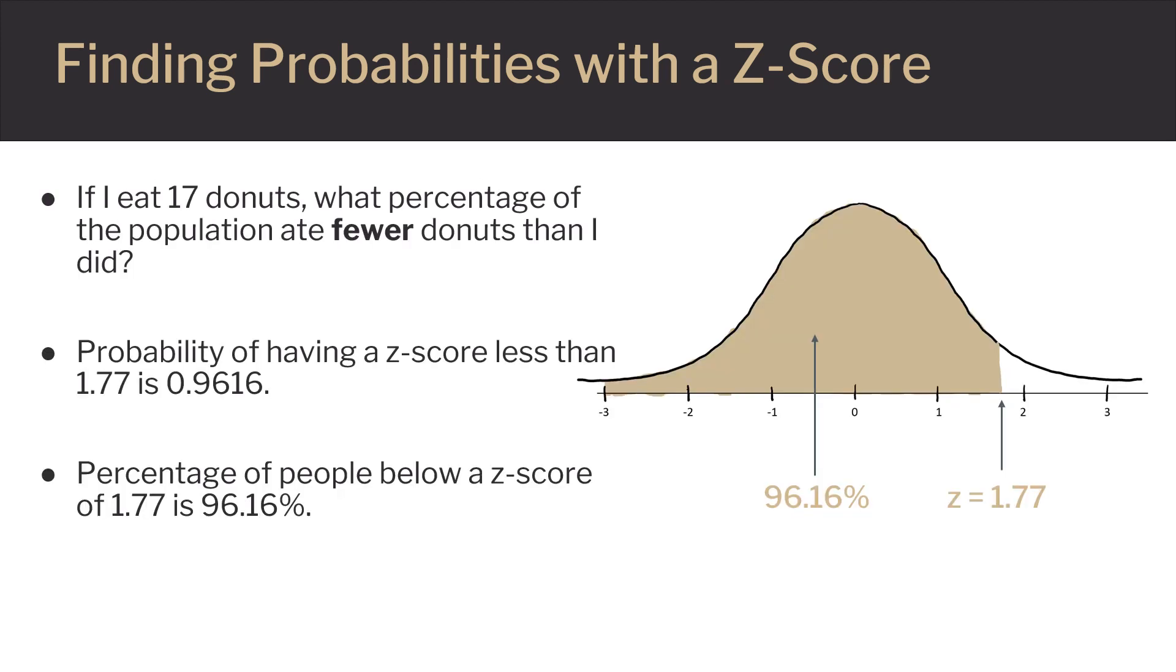Using this same example, if I eat 17 donuts, what percentage of the population ate fewer donuts than I did? The probability of having a Z-score less than 1.77 is 0.9616, which is the area under the normal distribution curve. So, the percentage of people below a Z-score of 1.77 is 96.16%.